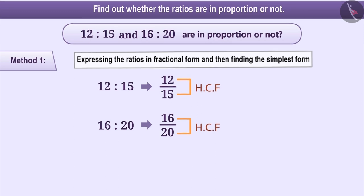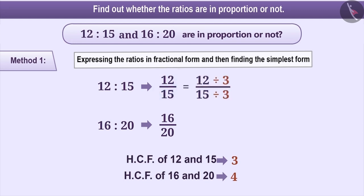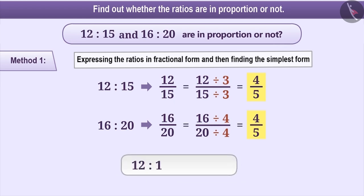Here, the HCF of 12 and 15 is 3, and the HCF of 16 and 20 is 4. We will divide the numerator and denominator of each fraction with the respective HCF. Dividing the numerator and denominator of 12 by 15 by 3, we get the simplest form 4 by 5. Similarly, dividing the numerator and denominator of 16 by 20 by 4, we get 4 by 5. Since the simplest forms of both fractions are equal, we can say that 12 is to 15 is equal to 16 is to 20. That means these two ratios are in proportion.